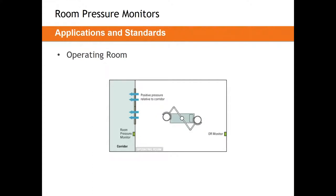For a standard operating room with a single entrance, applying the room pressure monitor is extremely simple. The room pressure sensor should go above the doorway, with the room pressure monitor to either side of that door to allow employees to know what's going on in that room before they enter.